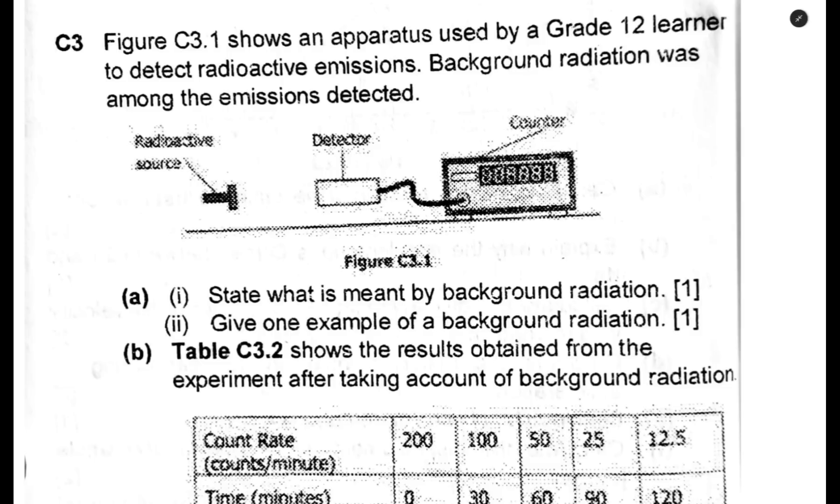The question reads: Figure C3.1 shows an apparatus used by a Grade 12 learner to detect radioactive emissions. Background radiation was among the emissions detected. The diagram shows the counter, the detector, and the radioactive source right here.